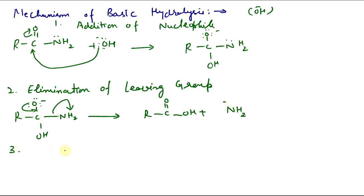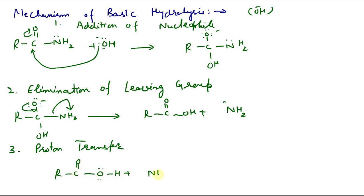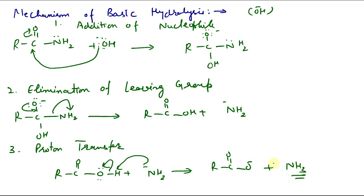The third step is proton transfer, similar to esters. The carboxylic acid R-C(=O)-OH reacts with NH₂⁻, which extracts a proton, giving the carboxylate anion R-C(=O)-O⁻ plus free ammonia. So this is the mechanism under basic conditions.